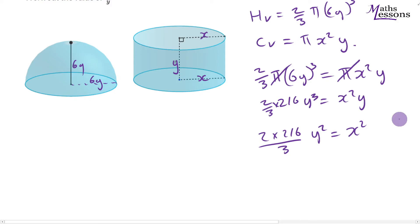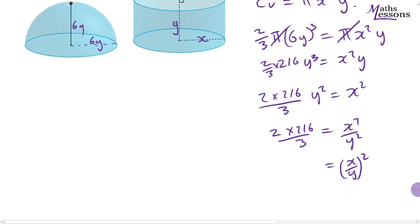Now what we want to do, we want to find x over y. So if we rearrange, we're going to get 2 times 216 over 3 will equal x squared over y squared. And to get x over y, we just need to square root because this is exactly the same as x over y all squared. So if we want to get that, let's work out 2 times 216 divided by 3 is 144, which is a nice number. So we want to find out what x over y equals, we just square root 144 to leave 12. So we've now found out what x over y equals, and it equals 12.